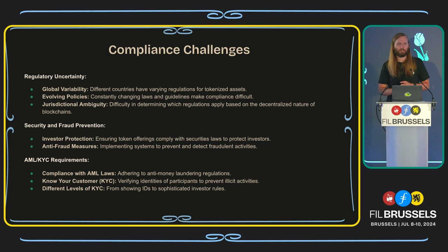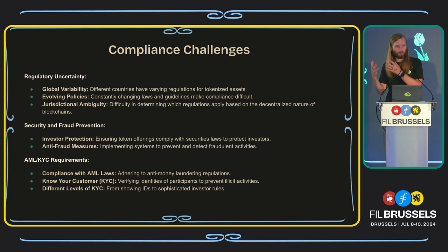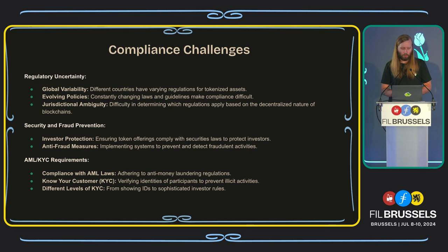Anti-fraud measures — implementing systems to prevent and detect fraudulent activities. The biggest RWA in circulation is USDC, run by Circle, and USDC can be frozen by Circle as a legal entity. That is a compliance reason — an anti-fraud measure we can already see in production today — and technologists need to keep an eye on that for compliance with the government.